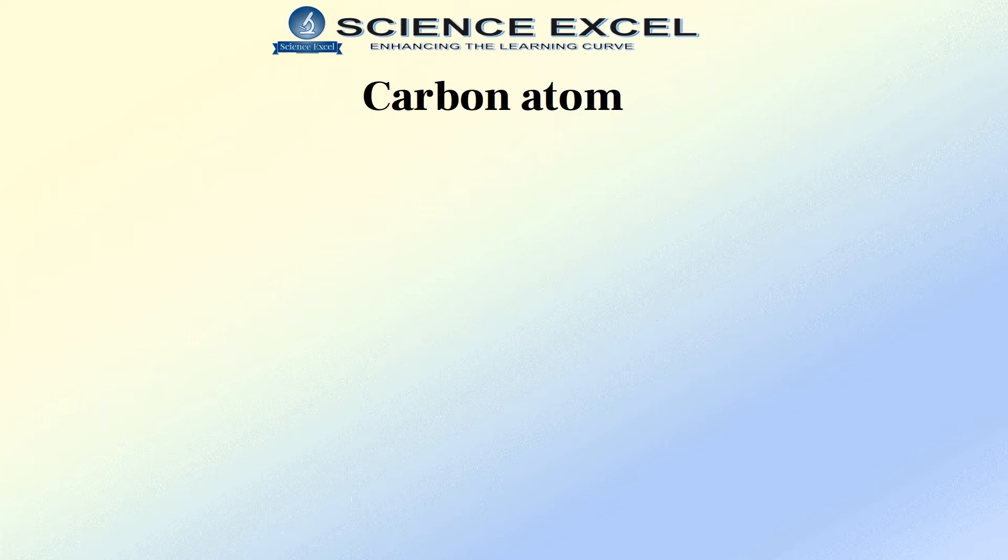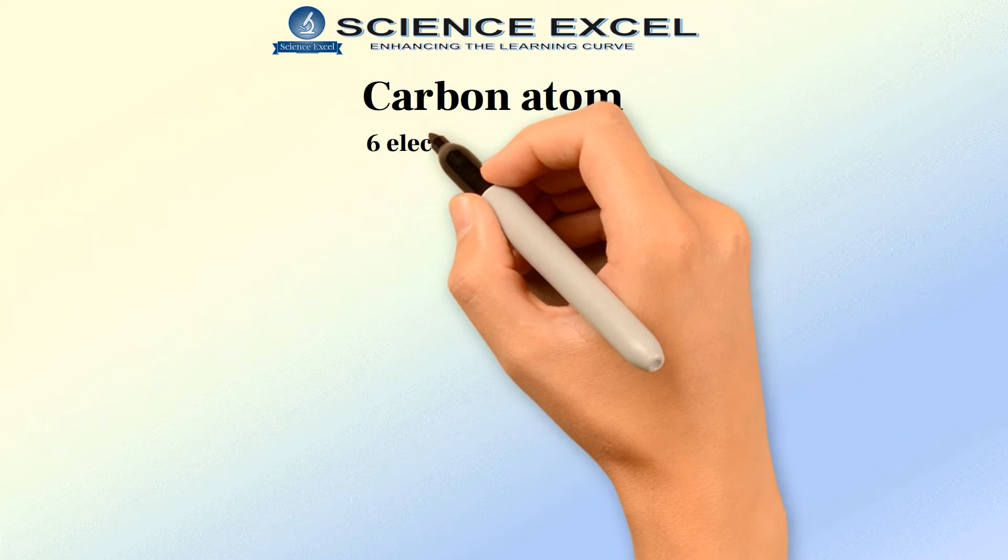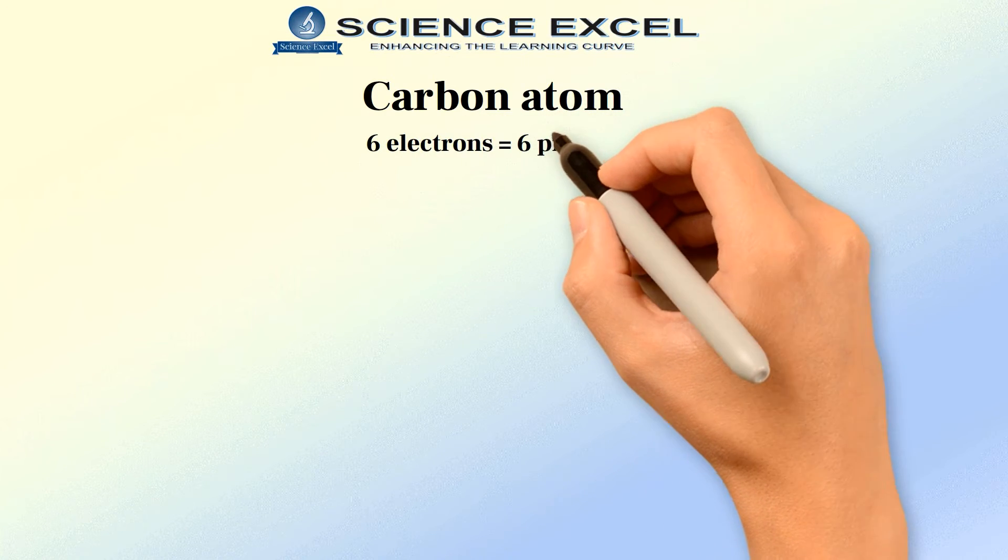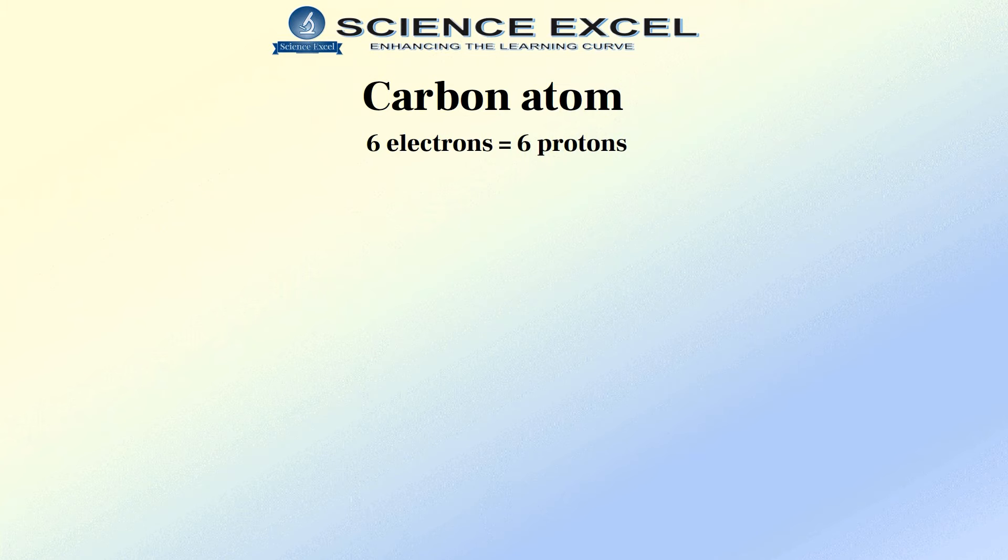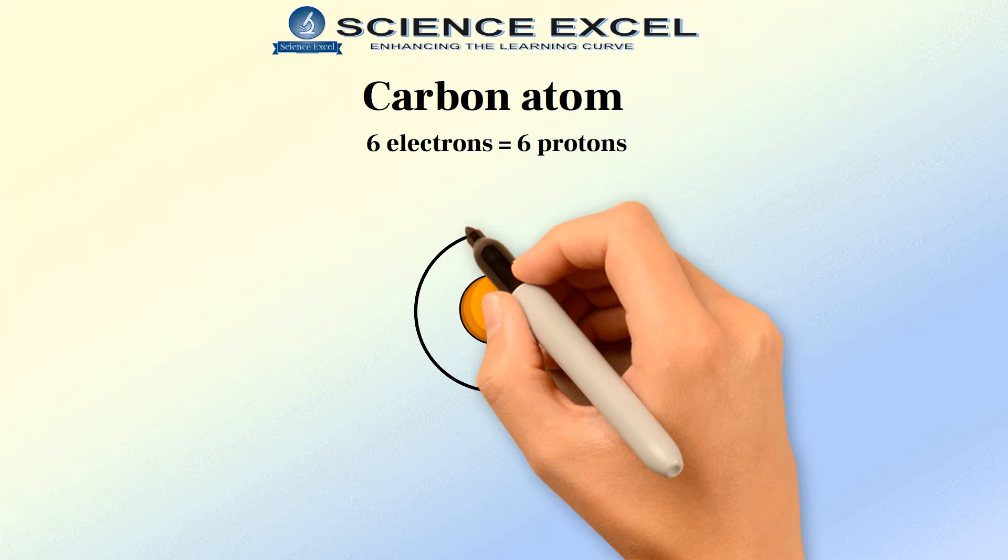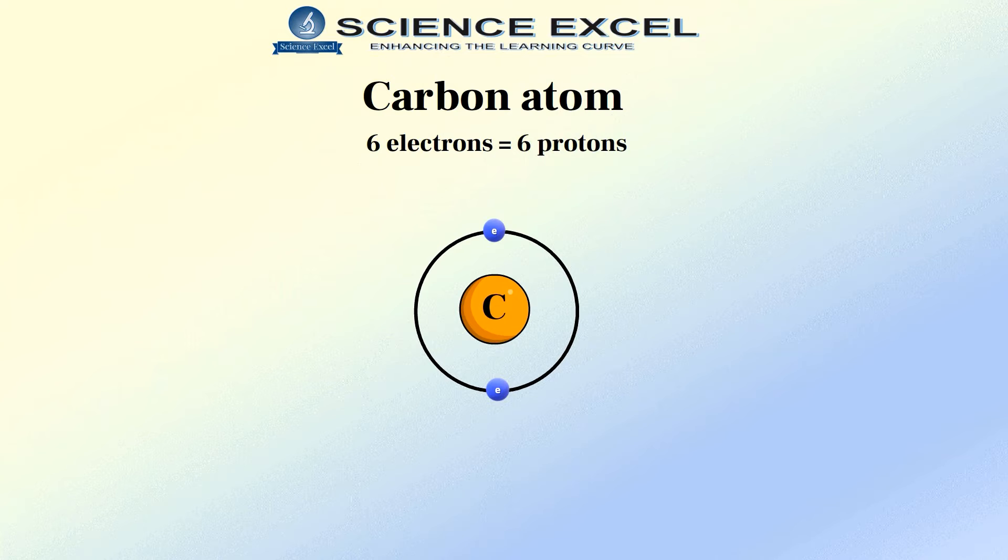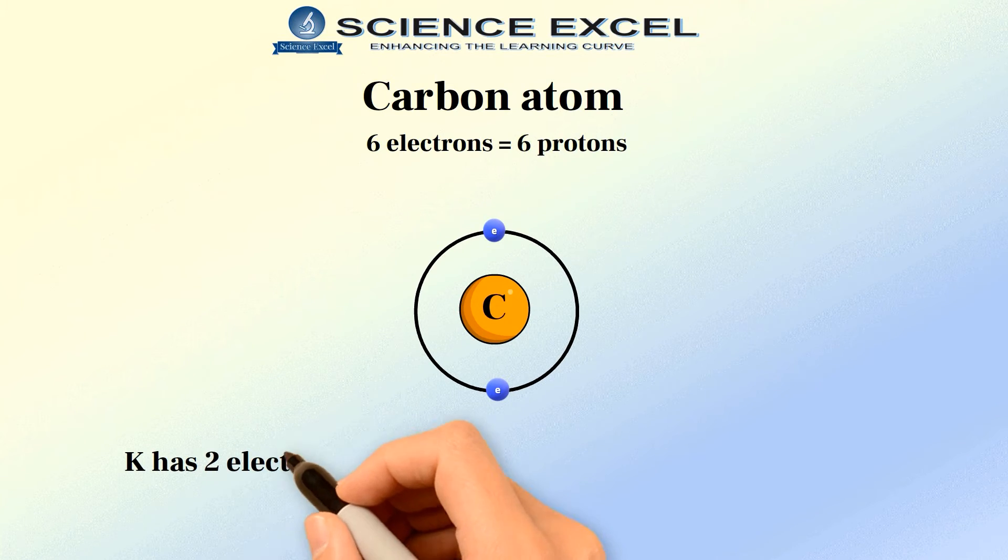With an atomic number of 6, it must have 6 electrons to balance the positive charge of the 6 protons in the nucleus. Let's put the first 2 electrons in shell K as this shell can only have a maximum of 2 electrons.